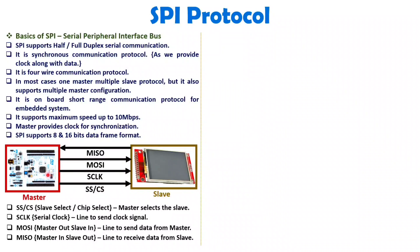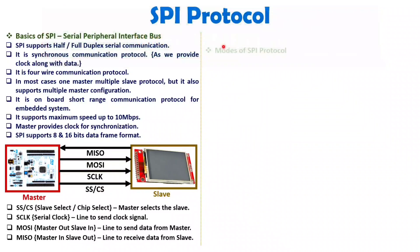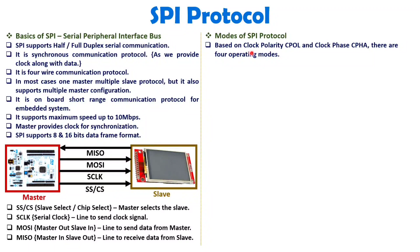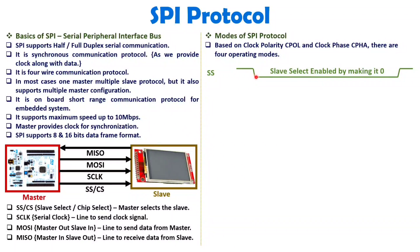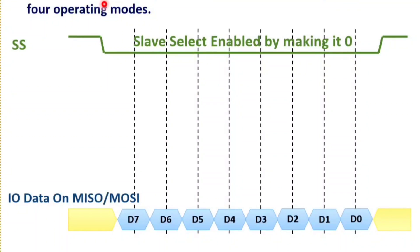SPI communication operates in four different modes, determined by the clock signal parameters. To understand these modes, we need to understand two parameters: Clock Polarity (CPOL) and Clock Phase (CPHA). Slave Select is set to logic low to establish communication. Once SS equals zero, both MOSI and MISO can exchange data in full duplex mode. The four modes correspond to different combinations of CPOL and CPHA.